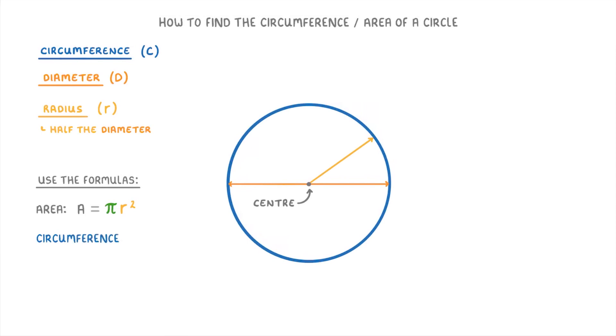Meanwhile for the circumference, we can either do circumference equals 2 pi r, so circumference is 2 pi times the radius. Or we can do circumference equals pi d, so circumference equals pi times diameter. The important thing to notice here is that these two equations for circumference both mean exactly the same thing, because 2 times the radius is the diameter.